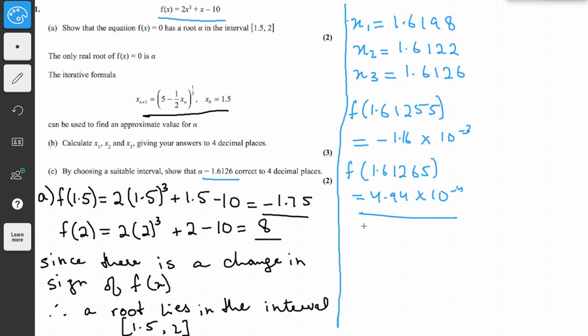So again, the same thing. Since there is a change in sign, that means that our root lies in the interval, and the interval you can write down as [1.61255, 1.61265].